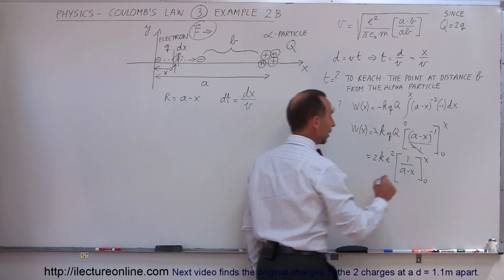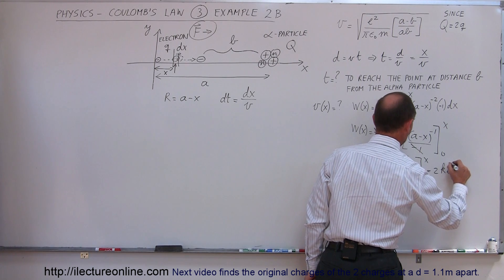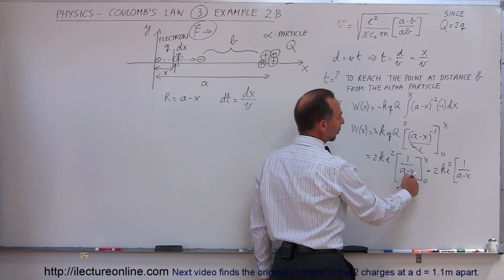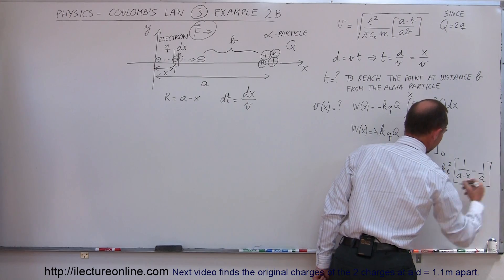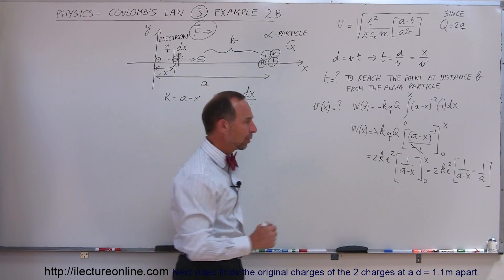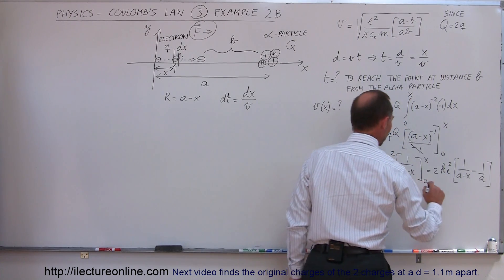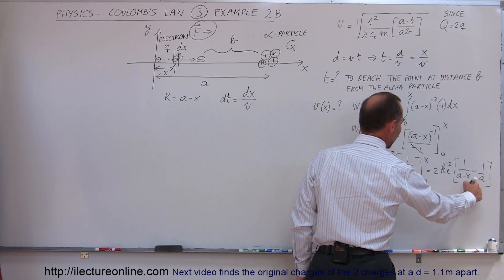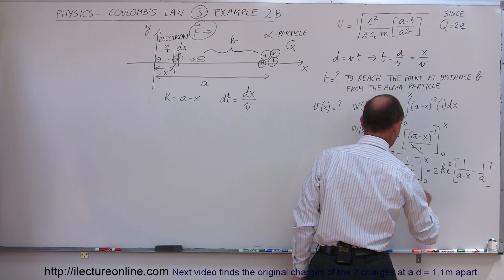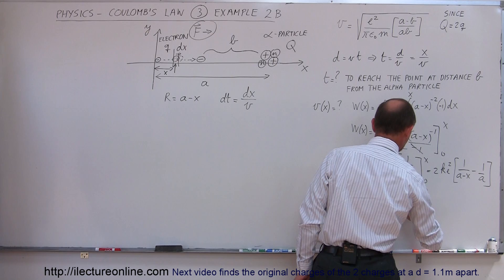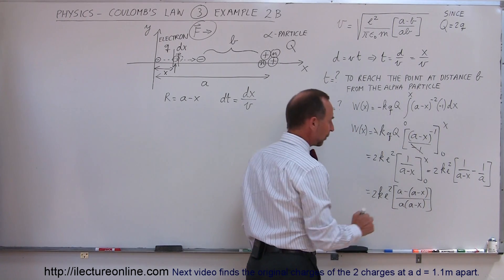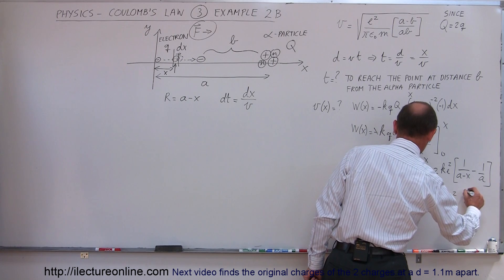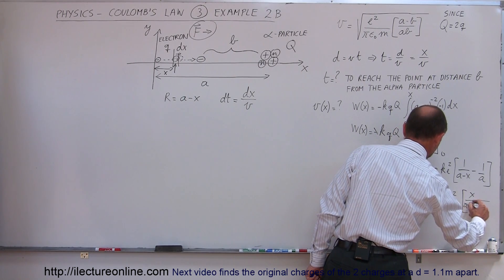When we plug in the upper limit we get: 2k times electron charge squared times 1 over a minus x, because plugging in the upper limit still gives x. When we plug in the lower limit, we get minus 1 over a. So we have the work done as a function of x. Simplifying over a common denominator, the numerator becomes a minus (a minus x), divided by a times (a minus x). The a's cancel out and the minus times the minus becomes a plus, so this equals 2ke² times x divided by a times (a minus x).